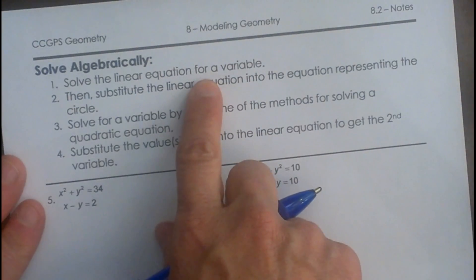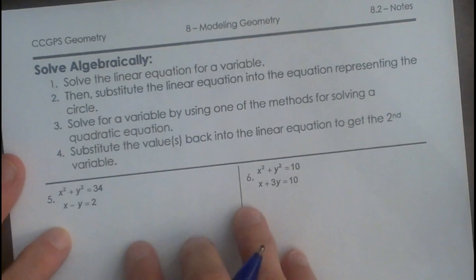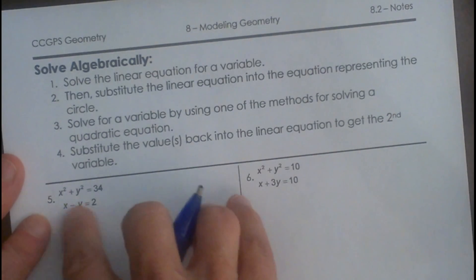First we're going to solve the linear equation for a variable. We're going to take the linear one, that's the one without any x squared in it, and solve for whichever one is easier.